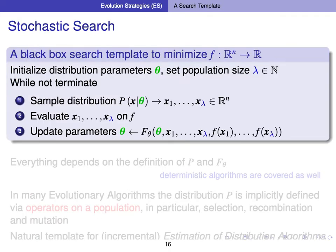This is a generic search template which describes stochastic search. We assume we have a distribution parameter theta and a population size lambda, and we initialize both. While not terminated: we sample from the distribution p given the parameter vector theta, sampling lambda new candidate solutions in R to the n. We evaluate the solutions on the objective function f. Then we update the parameters theta based on the old theta, the candidate solutions sampled, and the f values of the candidate solutions.